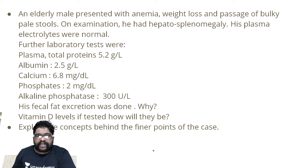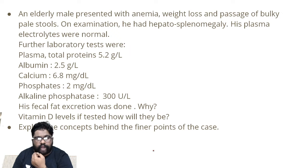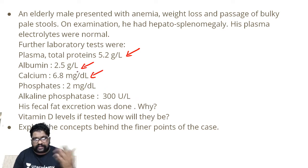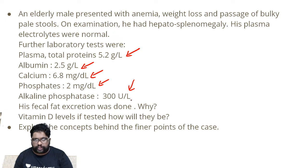An elderly male presents with anemia, weight loss, and passage of bulky pale stools. On examination he had hepatosplenomegaly. His plasma electrolytes were normal. Further lab tests revealed total proteins to be 5.2 grams per deciliter, albumin being 2.5 grams per deciliter, calcium 6.8 milligrams per deciliter, phosphate 2 milligrams per deciliter, and alkaline phosphatase level 300 units per liter.